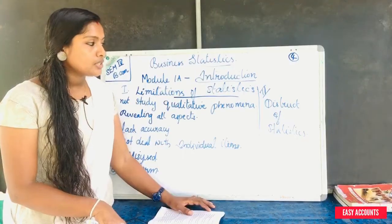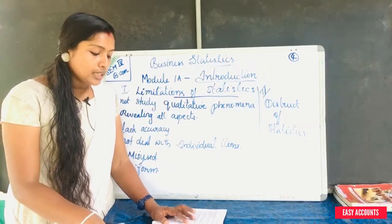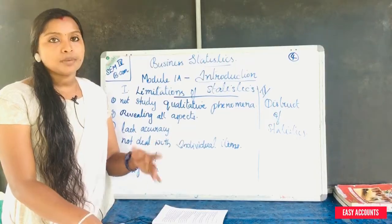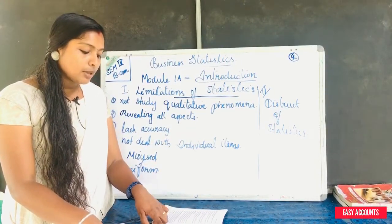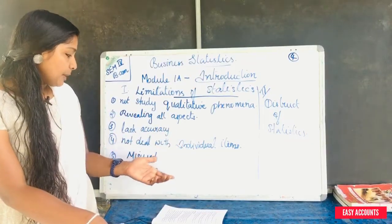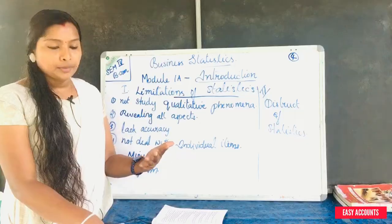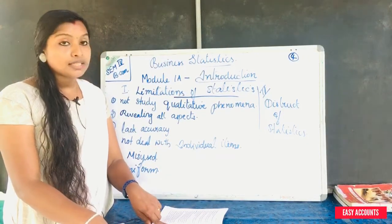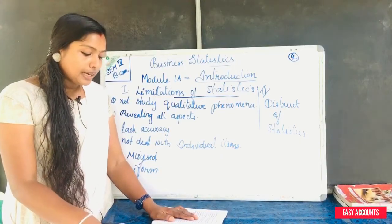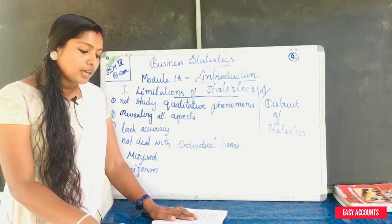The last topic is the distrust of statistics. Statistics are concerned with figures and methods for dealing with those figures. Figures are innocent, but are liable to be misused. They can be manipulated to establish a false conclusion. That is why people distrust statistics. Statistical methods are tools, like knives or sticks — they are liable to be misused if they fall in the hands of an ignorant and unscrupulous person.